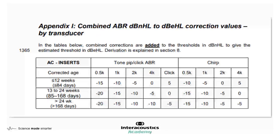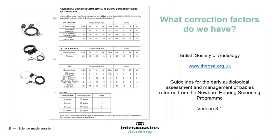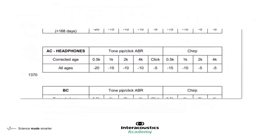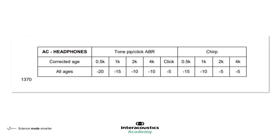It's really important to note that you must add these correction factors to the nHL values. You'll see that some are positive numbers and some are negative numbers. Remember, we are adding this correction factor value to our nHL number in order to get EHL values. So if you add a positive number, you simply add it, but if you add a negative number, you actually subtract it. Here we can see the correction factors for inserts, and you'll notice there are different stimuli. Next up, we can have a look at the correction factors for headphones, and we'll go into more detail about why there are limited age brackets here later.